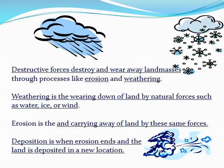Destructive forces destroy and wear away at land masses through processes like weathering and erosion — words you should remember from sixth grade, and you also read about them in your textbook before break. Weathering is when the land breaks down. Erosion is when the land moves. Deposition is when erosion stops and the land gets deposited in a new location.